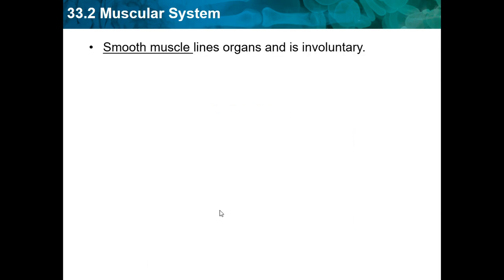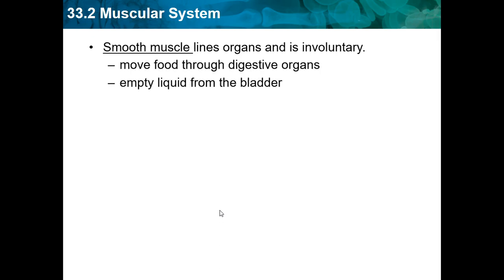Smooth muscle lines organs and is involuntary — you can't control what your organs do. Your heart never stops beating and you can't control your kidneys. Smooth muscle surrounds organs, moves food through the digestive organs, empties liquids from the bladder, and controls the width of blood vessels.